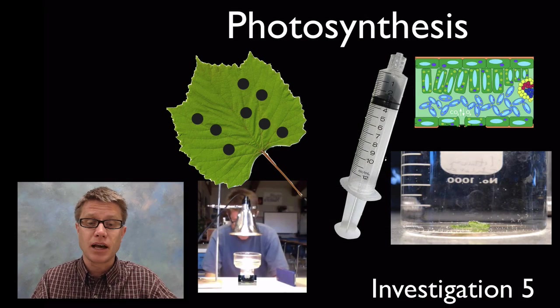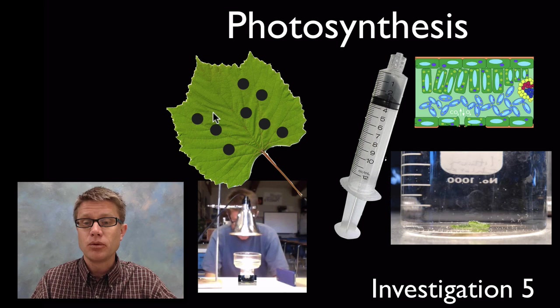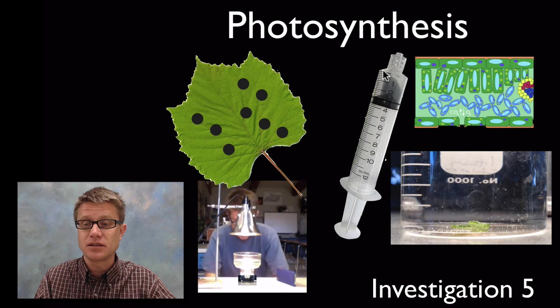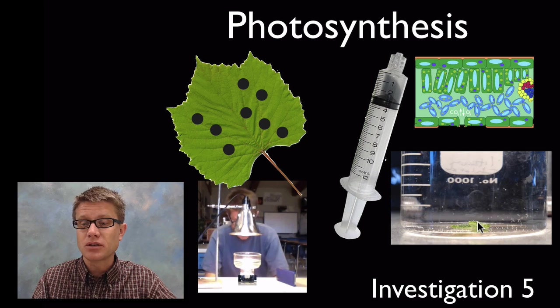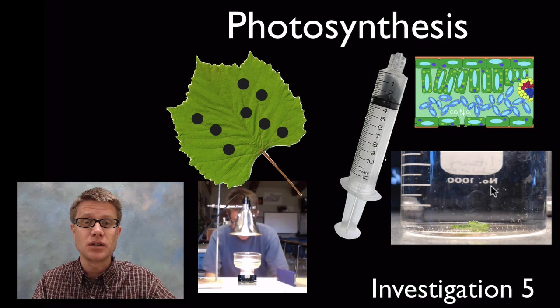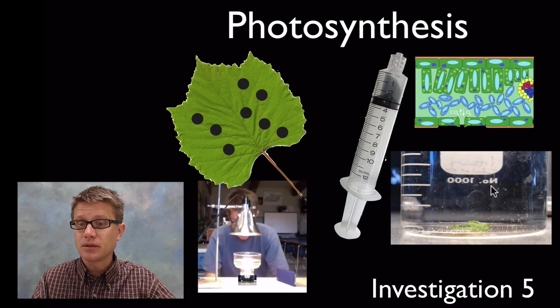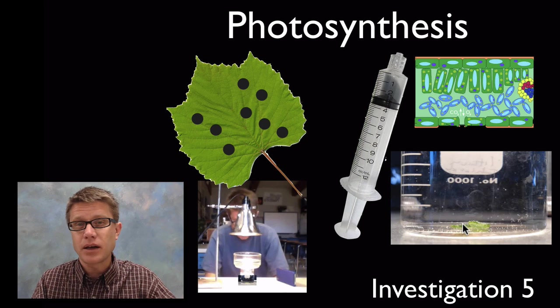Next is number 5, the photosynthesis lab. To do this as an inquiry lab, we take little chads—these are holes punched out of a leaf. We put them in a syringe and pull all the gases out of the chad. What happens to the chads is they sink to the bottom of a beaker. One other thing we have to put in that beaker is carbon dioxide, and we do that using a little bit of baking soda. We then apply light to it. What's going to happen is the light reaction is going to occur in here.